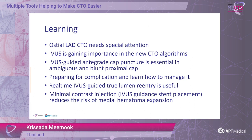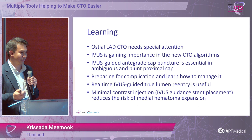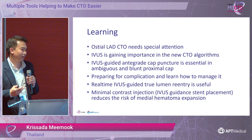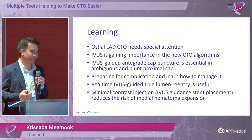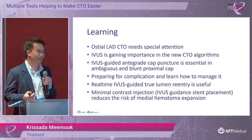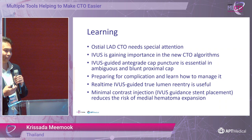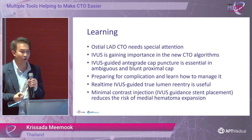IVUS is now increasingly important in the CTO treatment algorithm, as we saw from the global CTO crossing algorithm. In proximal cap ambiguity cases, we can use IVUS-guided antegrade cap puncture — this is extremely useful. For anyone performing CTO PCI, we must prepare for complications that may happen during the procedure and learn how to manage them. IVUS is also useful for real-time guidance to re-enter the true lumen, as shown in this case. When we see a very large subintimal space and have IVUS, we can use minimal contrast injection to avoid the risk of medial hematoma expansion. Thank you very much.